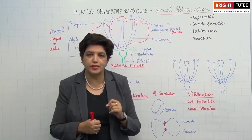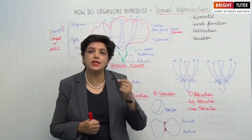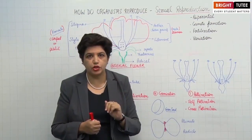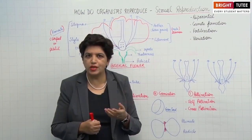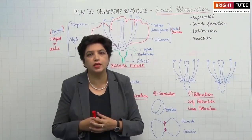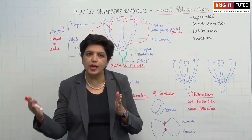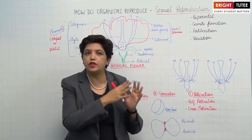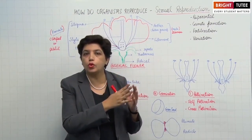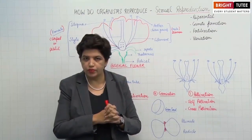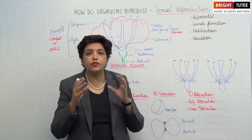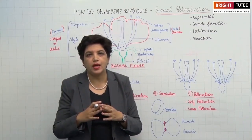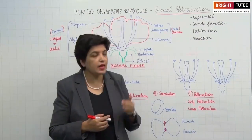This fertilization can be internal fertilization or external fertilization. If fertilization takes place inside the female body then it is called internal fertilization, as it occurs in humans, dogs, cats and many other animals — the male gamete enters the female body and the embryo grows inside. But in external fertilization, the fusion of male and female gametes takes place outside the body, as in frogs and fishes.